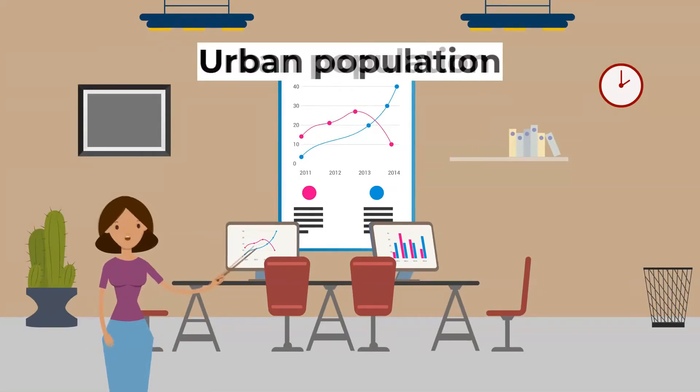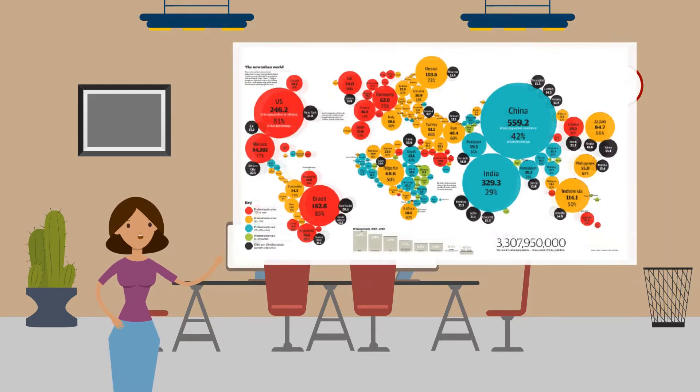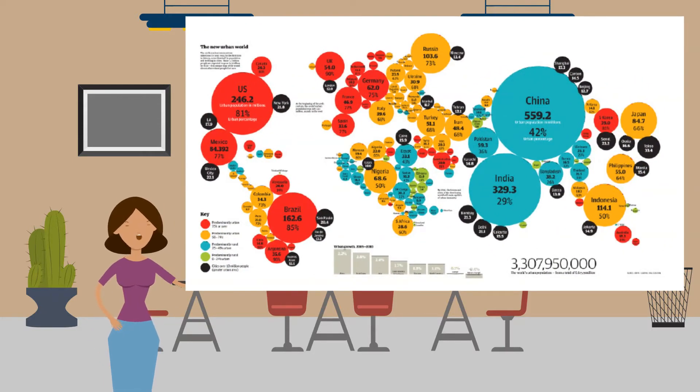More of the world's population is living in urban areas. Cities are expanding and the urban population is growing. This infographic shows each country's urban population in millions and the percentage of their entire population that live in urban rather than rural areas.